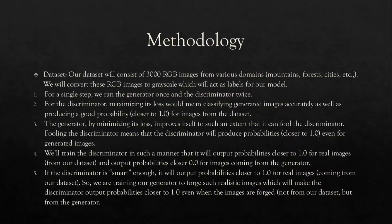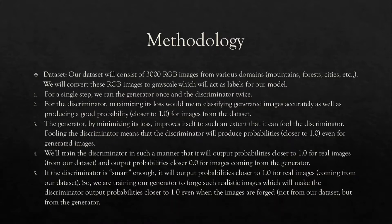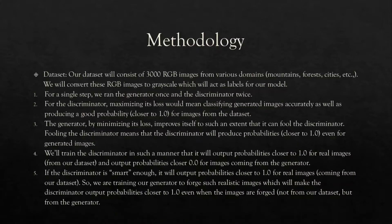The discriminator and generator act as adversaries — one component tries to maximize its goal over minimizing the other's. The discriminator tries to maximize its loss by classifying generated images accurately, while the generator tries to minimize its loss by improving itself enough to fool the discriminator. In the fourth step, we train the discriminator so that it outputs probabilities closer to one, meaning it classifies all images as real — indicating that our generator is trained so well that the discriminator is being fooled.